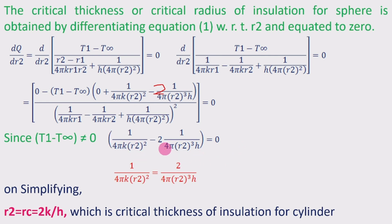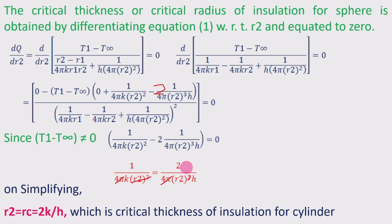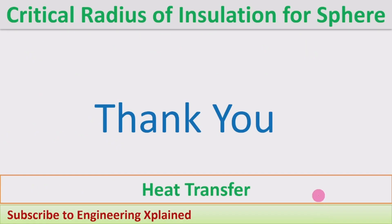Rearranging, we send one term to the right-hand side: 1/(4π K R2²) = 2/(4π H R2³). Cancelling the common 4π from both sides and R2² with R2³ leaves R2 on one side, so R2 = Rc = 2K/H. This is the critical radius of insulation for the sphere. Thanks for watching — if you like, share, subscribe, and comment.